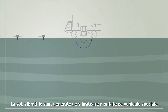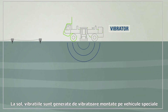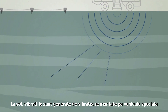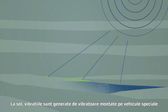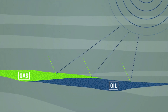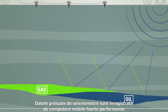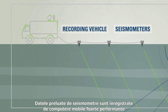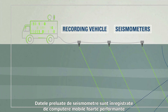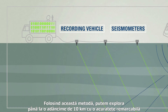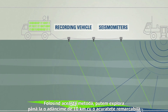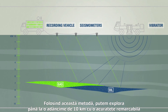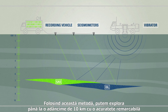On land, vibrations are generated by vibrators mounted on purpose-built vehicles. The data recorded by the seismometers is logged by powerful mobile computers. Using this method, we can explore as deep as 10 kilometers with remarkable accuracy.